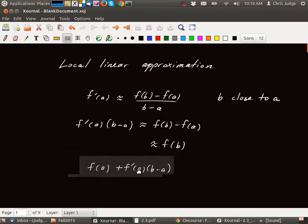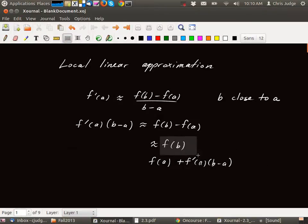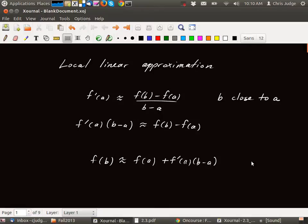Let's put the right hand side to the left hand side and the left hand side to the right hand side to make it nicer. Here's our local linear approximation formula. This is the formula we're going to use.